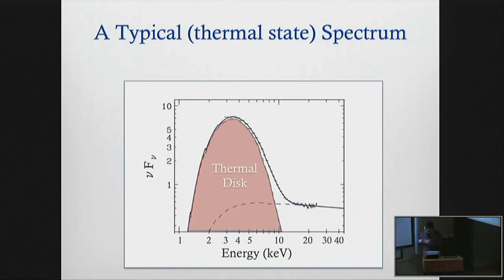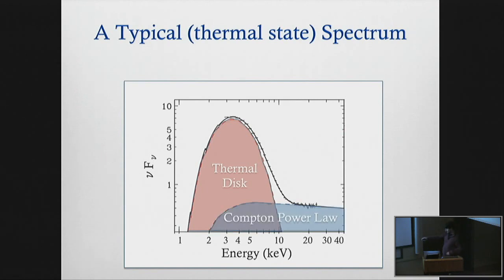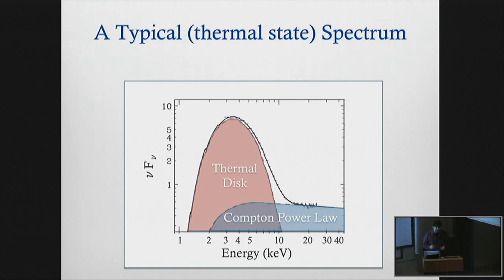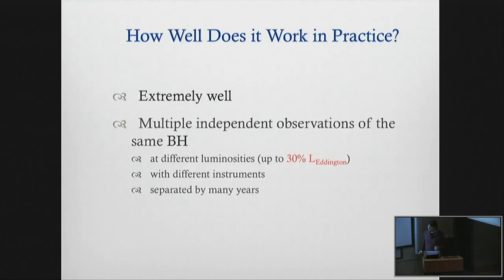Here's a very typical spectrum we might use to make these spin determinations - this is a system called 81743-322. You see there's a very bright thermal accretion disk component, and also some nuisance Compton power law component. For my purposes I'm trying to throw this away and really want to know about the thermal disk. We might have many dozens, or if we're lucky, even a couple hundred spectra like this for any given source. The principal question is: how well does this work in practice? I'm going to show you it works incredibly well.